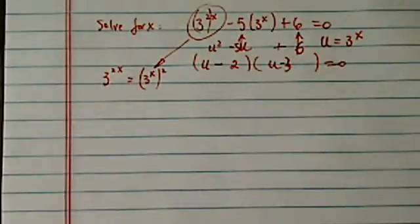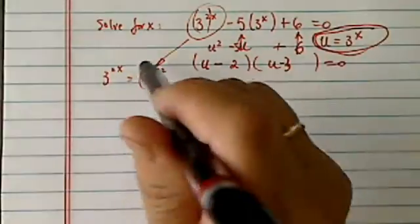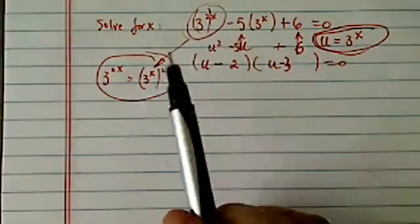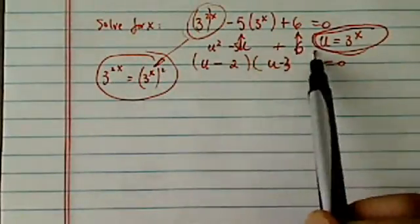From there it should be straightforward. The first trick is recognizing the substitution. The second trick is handling the leading term to make sure it fits into your quadratic form.